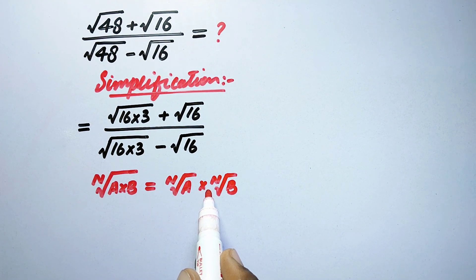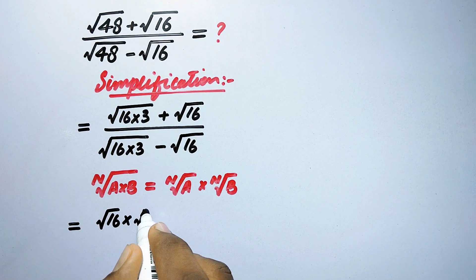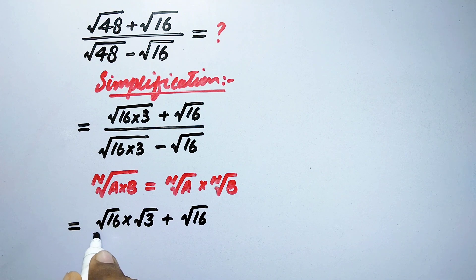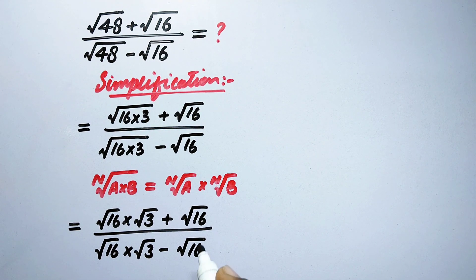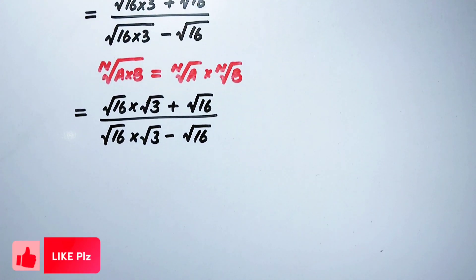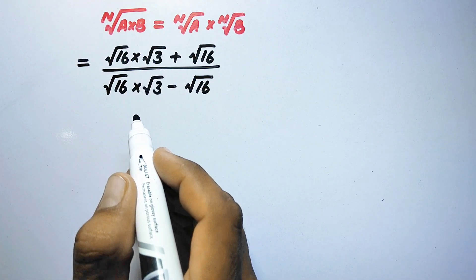By following this property, the square root values can be written as square root of 16 times square root of 3, plus square root of 16, divided by square root of 16 times square root of 3, minus square root of 16. Now we can see that square root of 16 is common in both the numerator and the denominator.